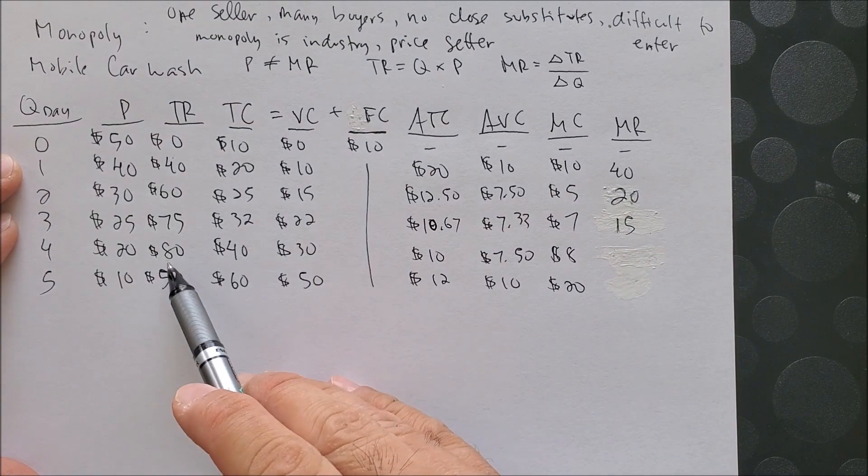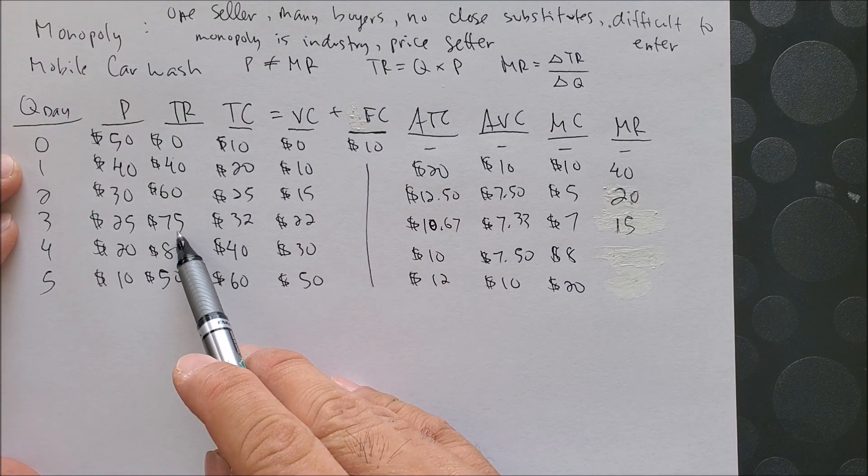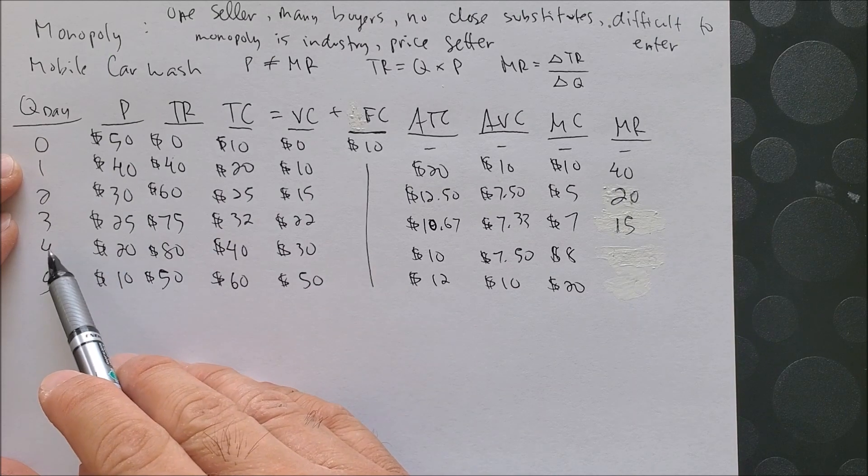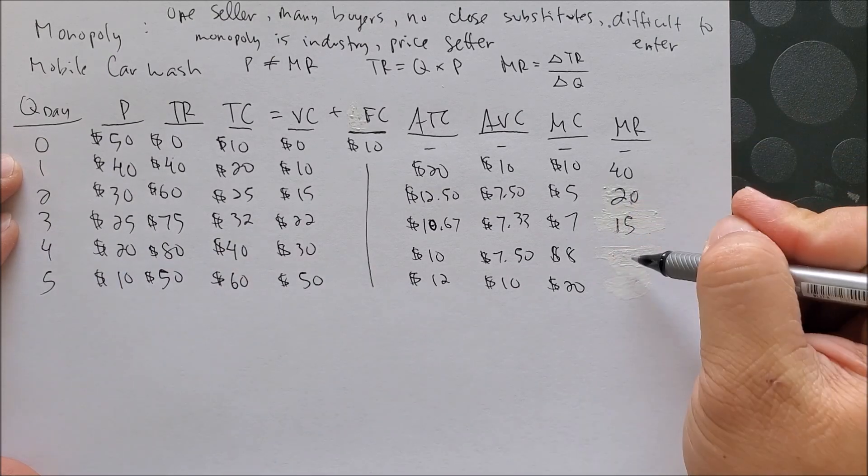From 3 to 4, we have 80 minus 75, that's 5, over 4 minus 3, that's 1, which gives us 5.